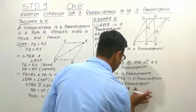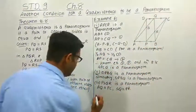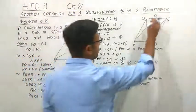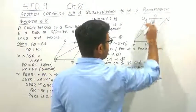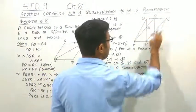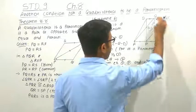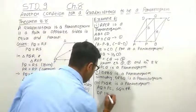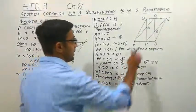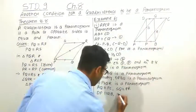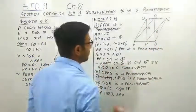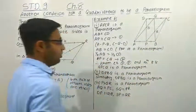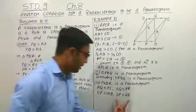So SQ is parallel to PR. In the same way, we have proved that DPBQ is a parallelogram. So DP is parallel to BQ. Here we can see that SP is a part on DP, and QR is a part on BQ. So these two parts also become parallel, giving SP parallel to QR.